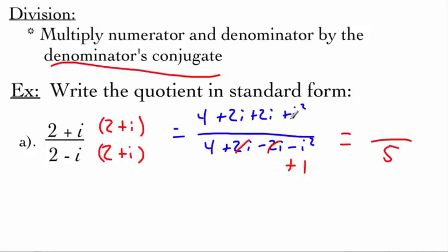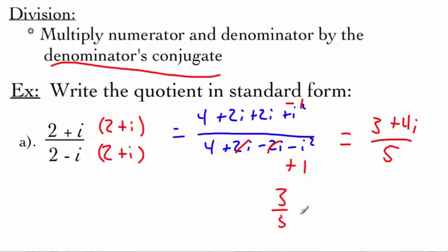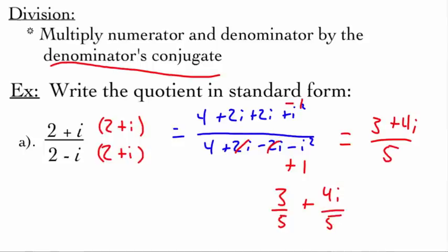Across the top, we combine like terms: 2i and 2i give 4i, and i squared is negative 1, so 4 minus 1 gives 3. We now have the fraction (3 plus 4i) over 5. We can split this into two pieces: 3 fifths plus 4i over 5. That is our complex number in standard form.